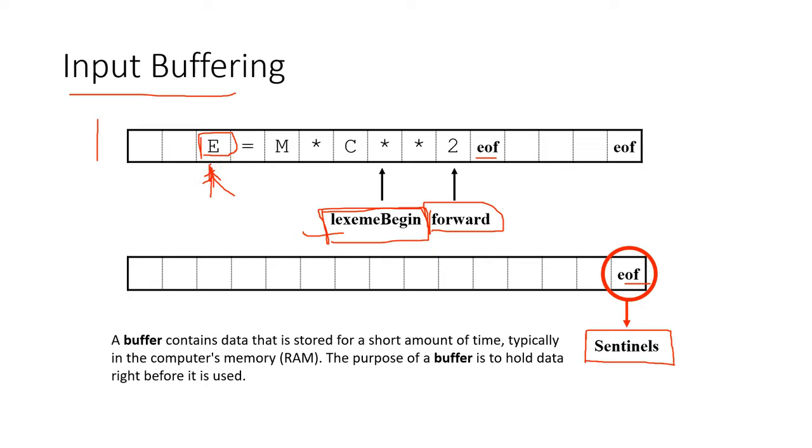But it's not, it's just E. So the lexeme begin will be at E and the forward pointer will move to the next input symbol, which is this equals to. After we encounter the equals to or a space or some other character which isn't applicable to an identifier or variable, we get to know that E is a single lexeme.